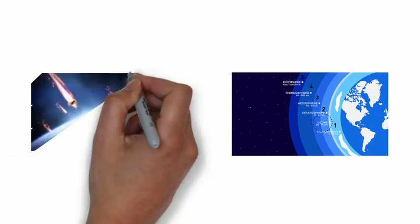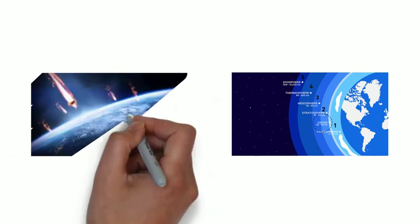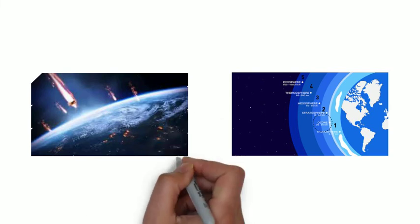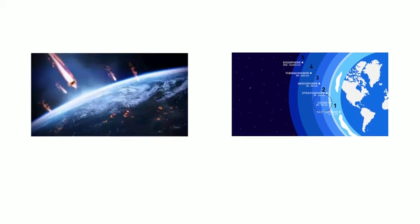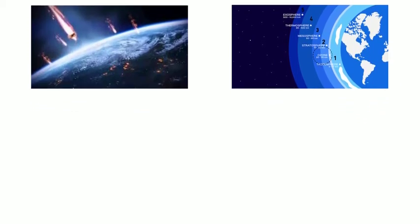The mesosphere layer protects the Earth from meteoroids. When meteoroids and asteroids enter the mesosphere layer, they burn and vanish before reaching the surface of the Earth. Because there are enough gases in the mesosphere layer, friction and heat are generated and burn up meteoroids into ashes.